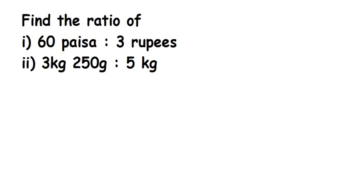This type of question is for one or two marks. So how to do it — find the ratio of 60 paise and 3 rupees. You can see they are in different units. Whenever you're finding a ratio, they have to be in the same unit. It is always easy to convert rupees into paise because converting paise to rupee gives a decimal answer and becomes more complicated. Similarly, for the second question, I'm going to convert everything into grams.